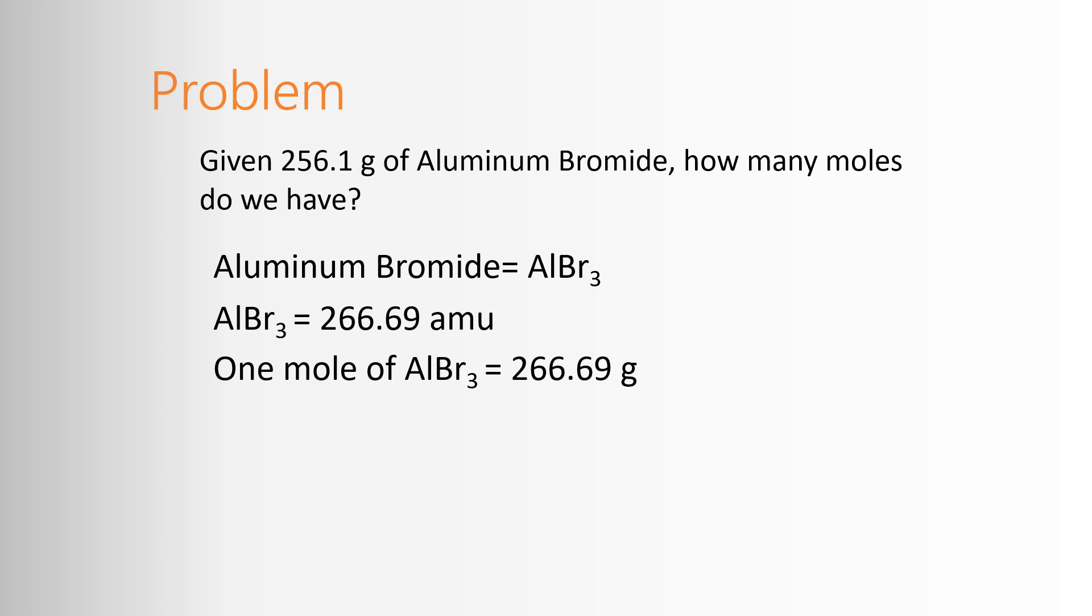That also means that one mole of aluminum bromide is 266.69 grams. If I'm talking about a single formula unit, it's AMUs. If I'm talking about a mole of that formula unit, it's grams. I can use this in a dimensional analysis. I want to know the moles of aluminum bromide. I have 256.1 grams. I know for one mole there are 266.69 grams. Gram cancels gram. This divided by that gives me 0.9603.